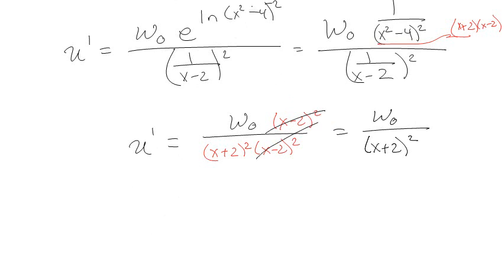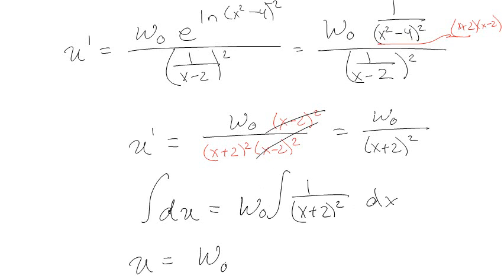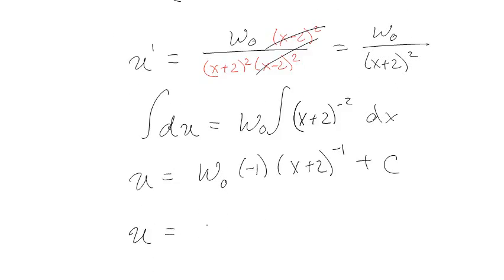Now, I can integrate both sides. Integrate. Well, hold on. Let me make it pretty, and then I'll integrate. So let's call it du is equal to omega naught 1 over x plus 2 quantity squared dx. And I'll integrate. So I've got that u is equal to that. And then if I just write it like x plus 2 to the negative 2, then that's negative 1 x plus 2 to the negative 1, plus some unknown constant.